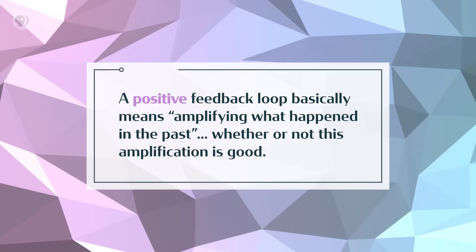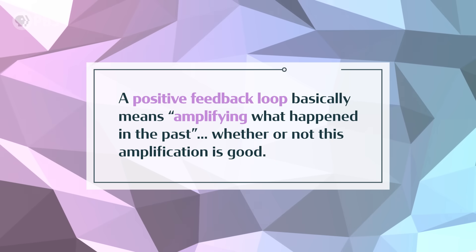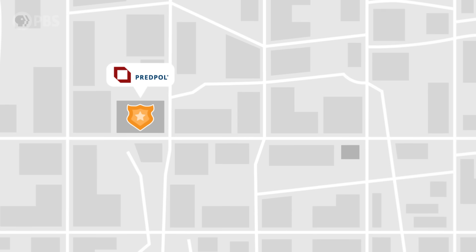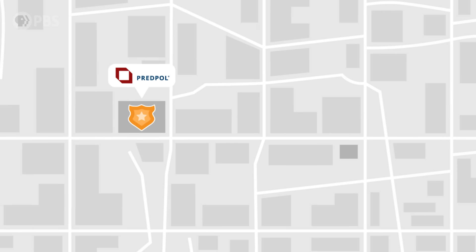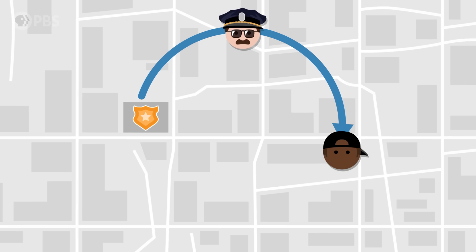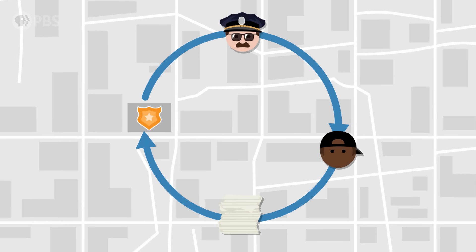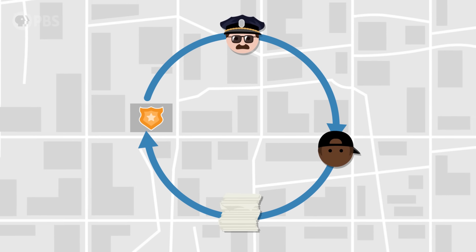Fourth, the algorithm could influence the data that it gets, creating a positive feedback loop. A positive feedback loop basically means amplifying what happened in the past, whether or not this amplification is good. An example is PredPol's drug crime prediction algorithm, which has been in use since 2012 in many large cities, including L.A. and Chicago. PredPol was trained on data that was heavily biased based on past housing segregation and cases of police bias. So it would more frequently send police to certain neighborhoods where a lot of racial minority folks lived. Arrests in those neighborhoods increased, and that arrest data was fed back into the algorithm, and the AI would predict more future drug arrests in those neighborhoods and send the police there again.